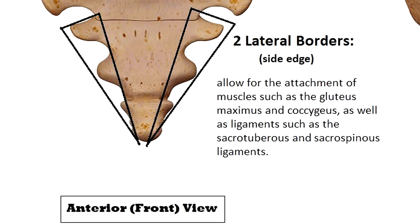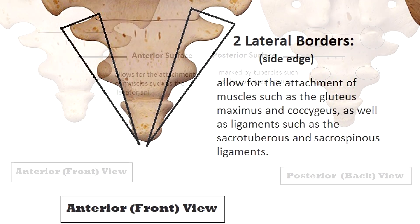The thin lateral borders or sides of the coccyx allow for the attachment of muscles such as the gluteus maximus and the coccygeus, as well as ligaments such as the sacrotuberous and sacrospinous ligaments.